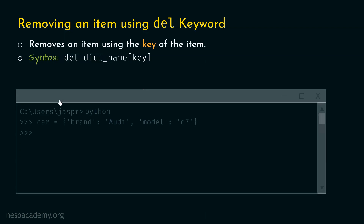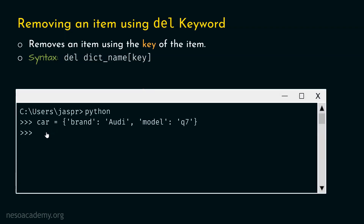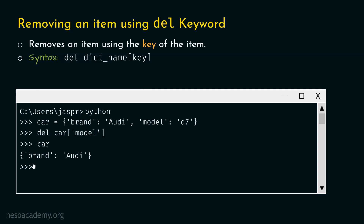The syntax is: del, then the name of the dictionary, then within square brackets the item's key. Let's open the command prompt with the same car example and delete 'model': 'Q7' using del. We write: del car['model'] and hit enter. We are not getting any return value because del never returns the deleted item — it simply deletes it. Typing 'car' confirms we are getting the dictionary with just one key-value pair remaining.